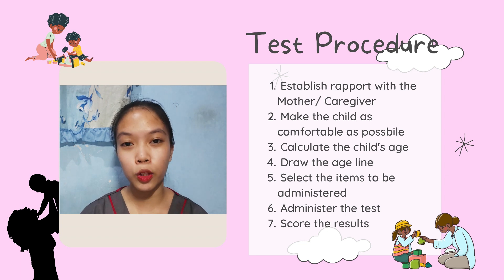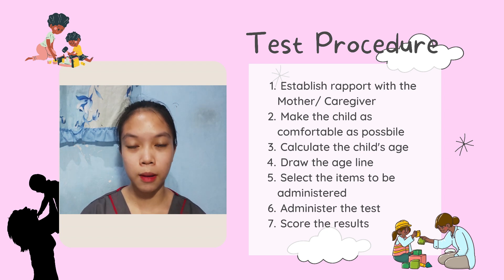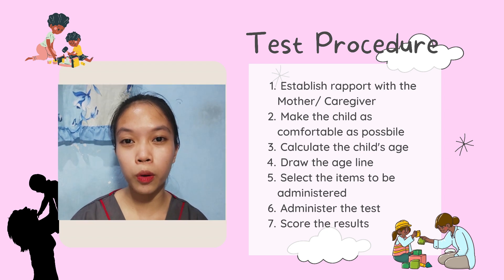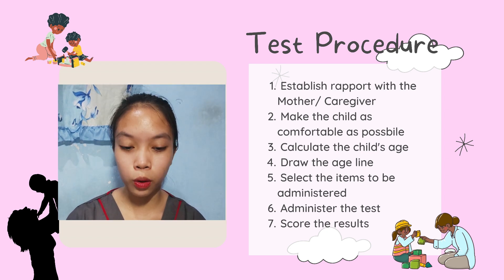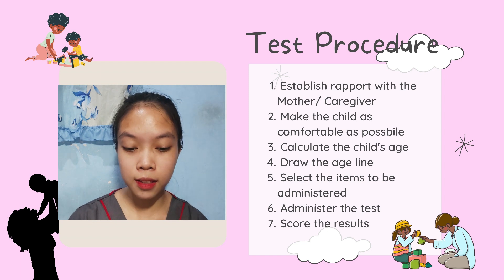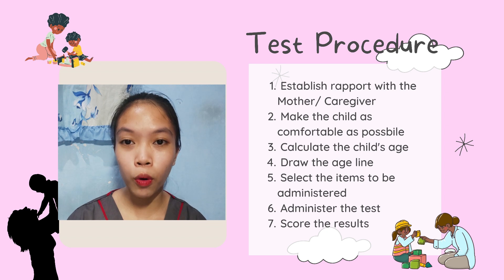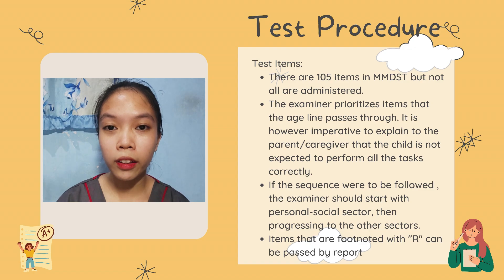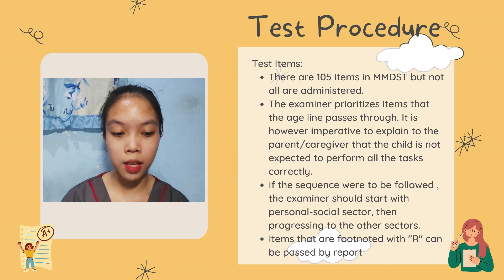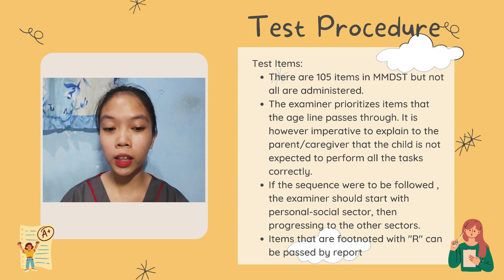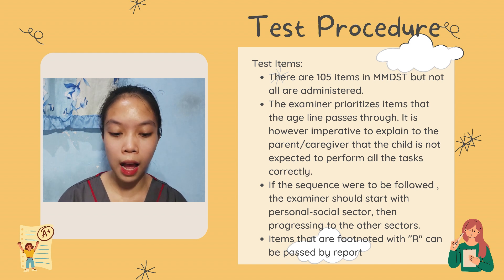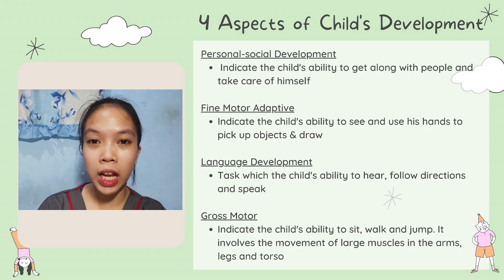Next, we select the tasks to administer to the child. After administering the test, we score the results: P for passed, F for failed, R for refused, and NO for no opportunity. There are 105 test items in the MMDST, but not all are performed with the child — the priority is the items that fall on the child's age line.